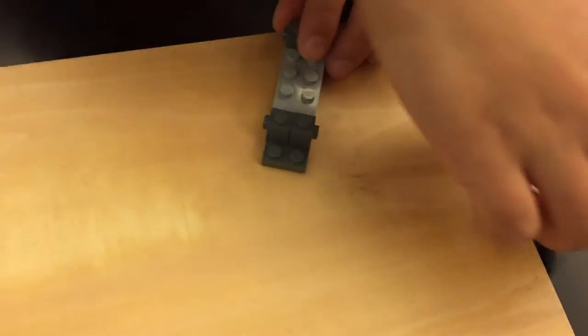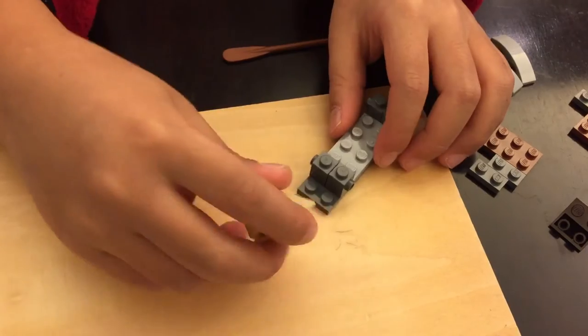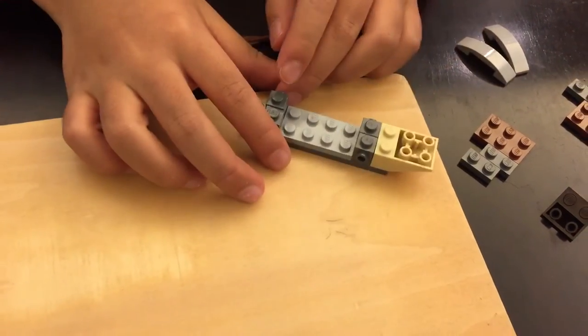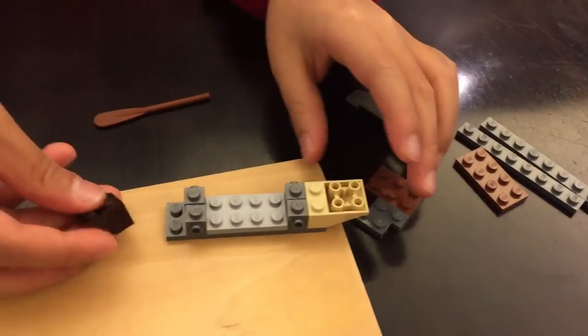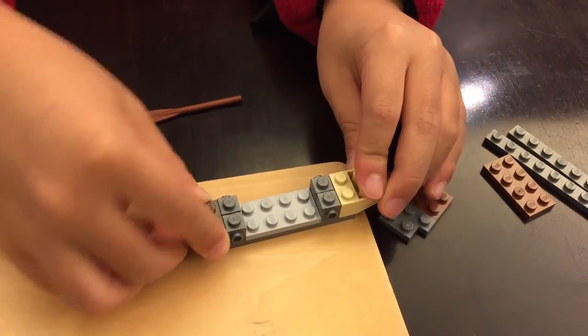After that you'll get this block, the one with 6 studs. It will be used for the front right here. Then you get the other 4-studded one and put it there.